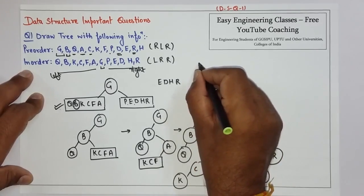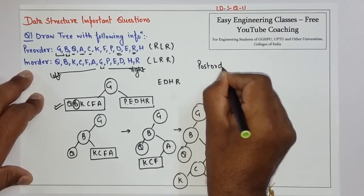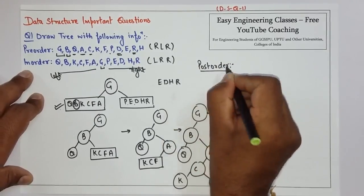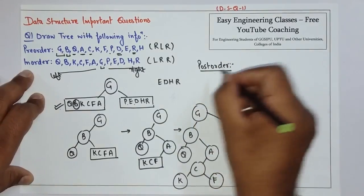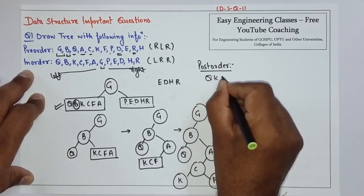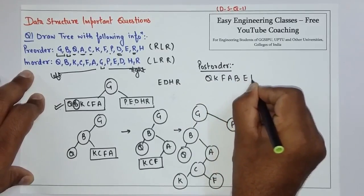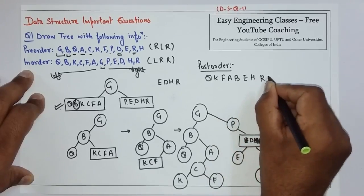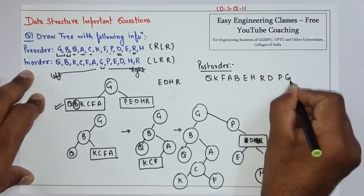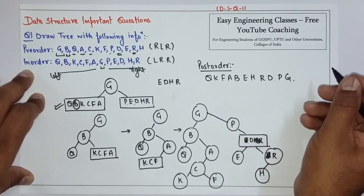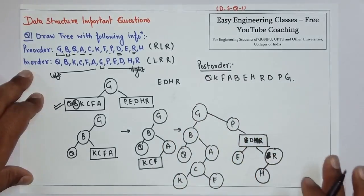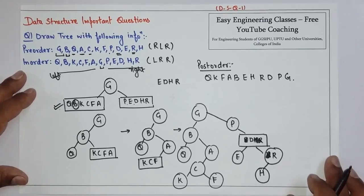Also, in this question it says find the post-order traversal. So the post-order traversal of this will be Q, K, F, A, B, E, H, R, D, P, and G. This will be the post-order traversal for this particular tree.